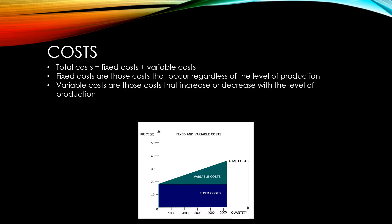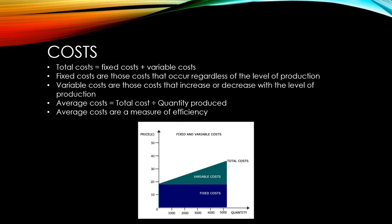Average costs, or the cost per item produced, is the total cost divided by the quantity being produced. Average costs are a measure of efficiency. If average costs are going down, then a firm is becoming more efficient. If they're rising, then a firm is becoming less efficient.